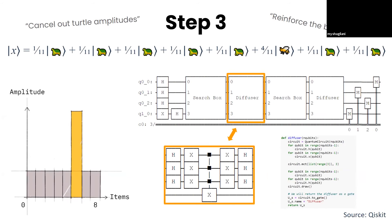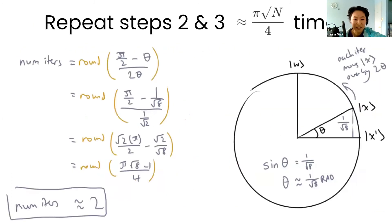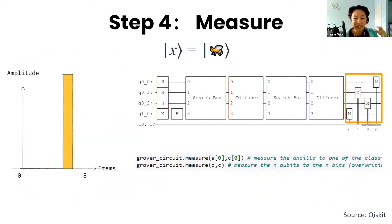This time it cancels out the turtle amplitudes and it reinforces the amplitude of the bee. Each time we repeat steps two and step three, the amplitude of the bee gets reinforced a little bit more and it gets a little bit higher. We have to repeat steps two and three around the square root of eight times after doing some trigonometry to find that out. The square root of eight is around two, so after we repeat steps two and three twice, the wave at the bee will be so much higher than the waves at all the turtles that it's almost certain that we will find the wave there when we do measure it.